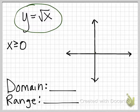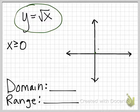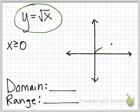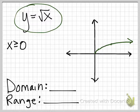The graph starts at (0, 0), and it goes through (1, 1), and it's going to go through (4, 2), and it's going to look like this. It's basically half of a parabola — it goes up and to the right. So this is the parent function.